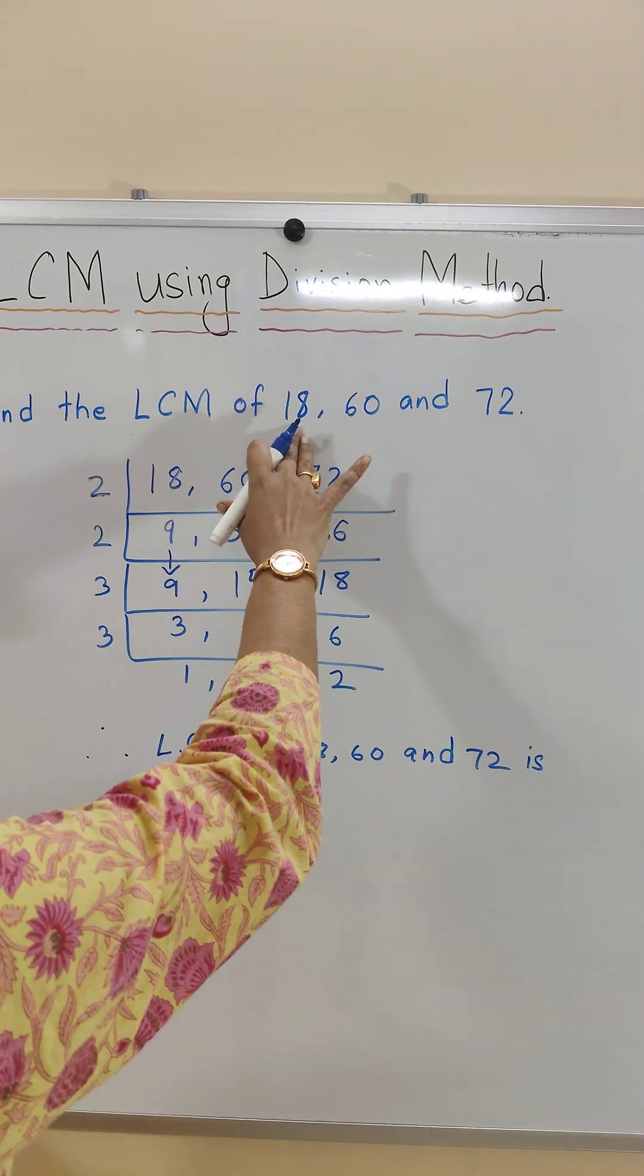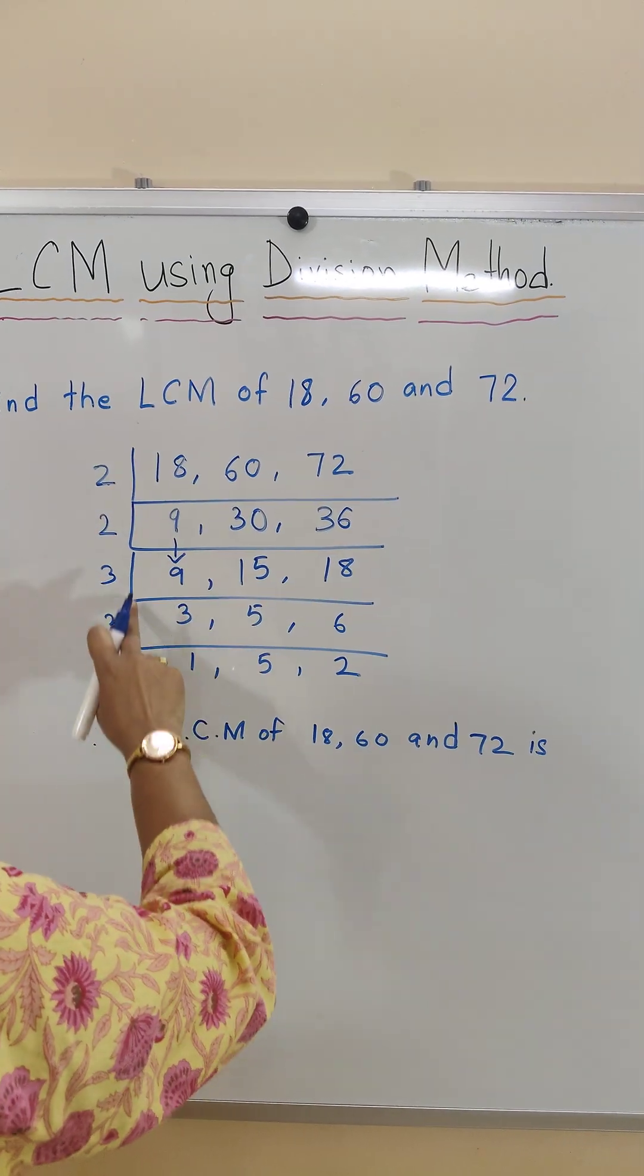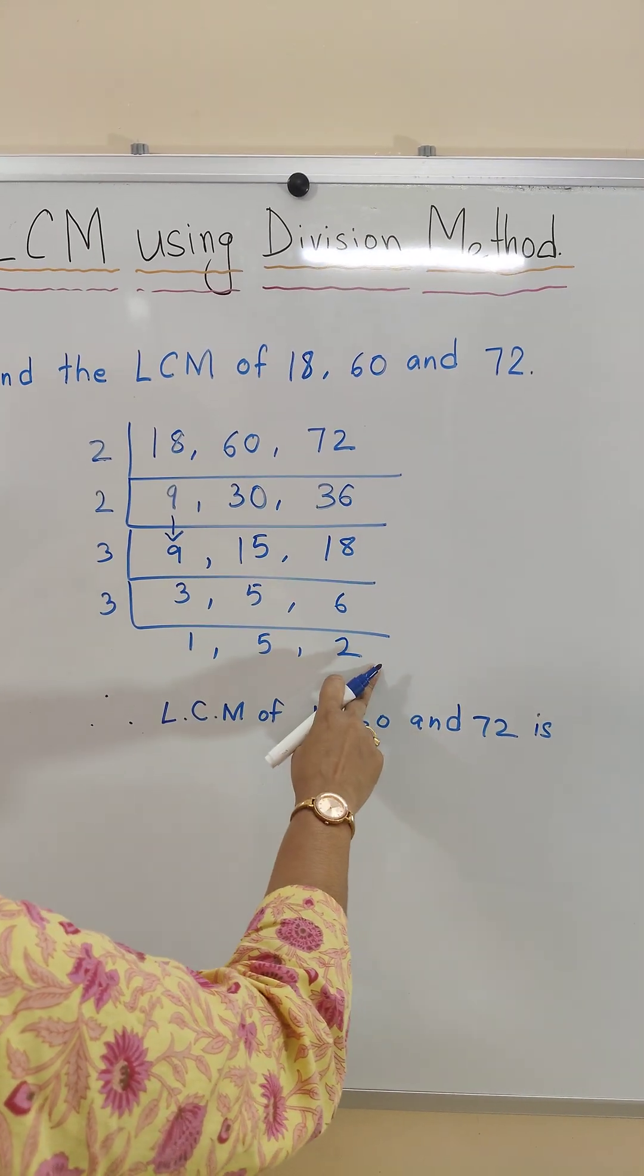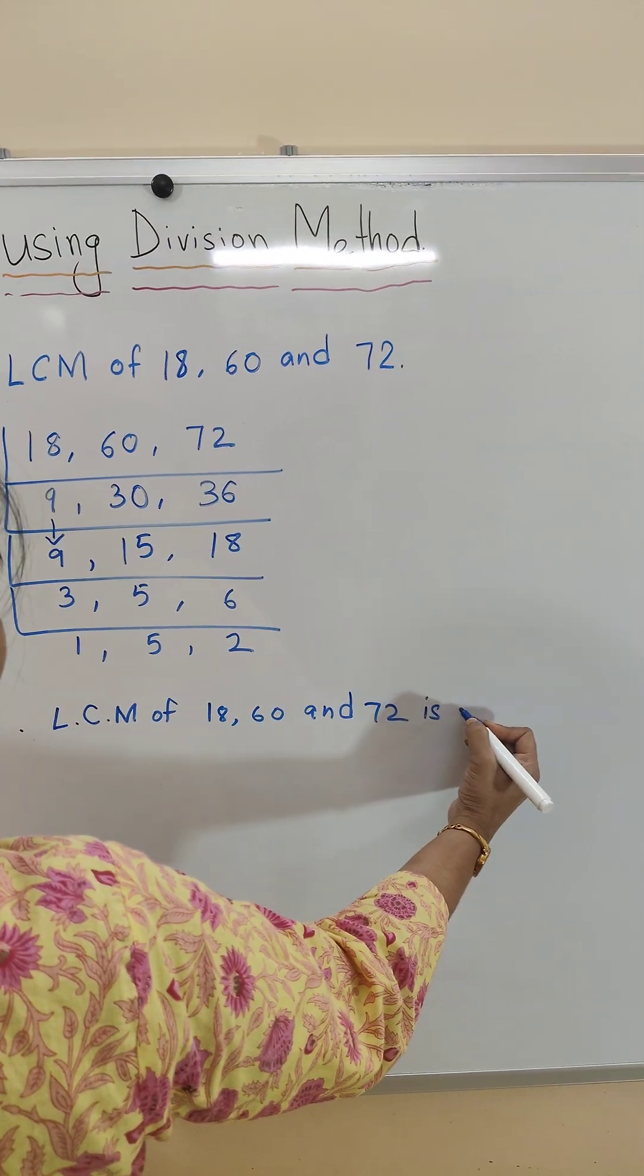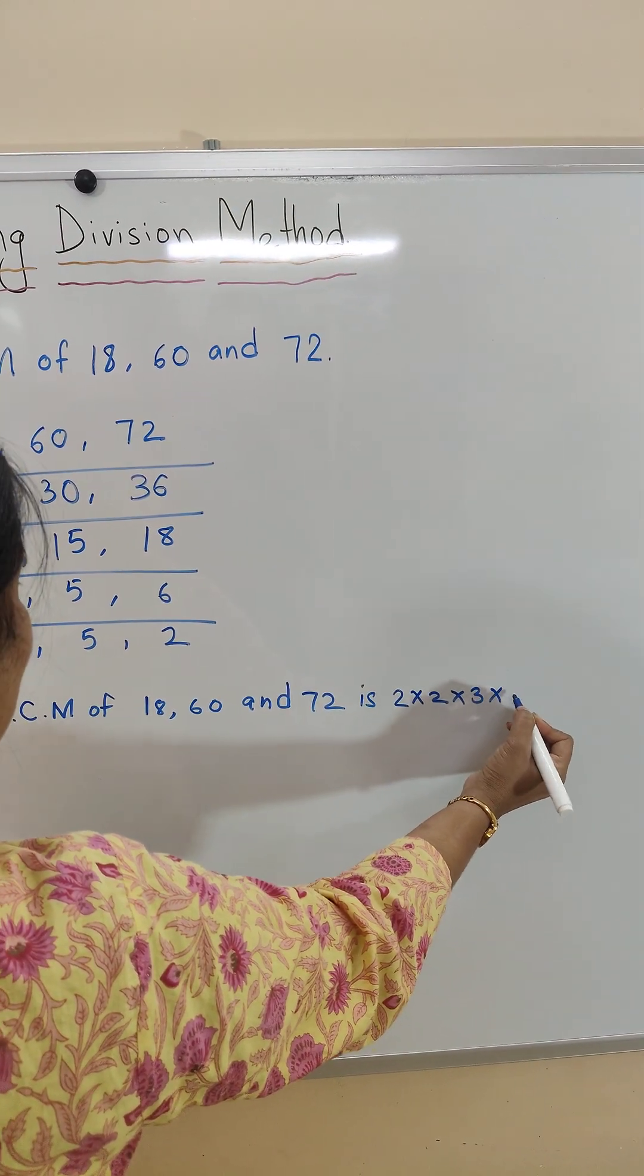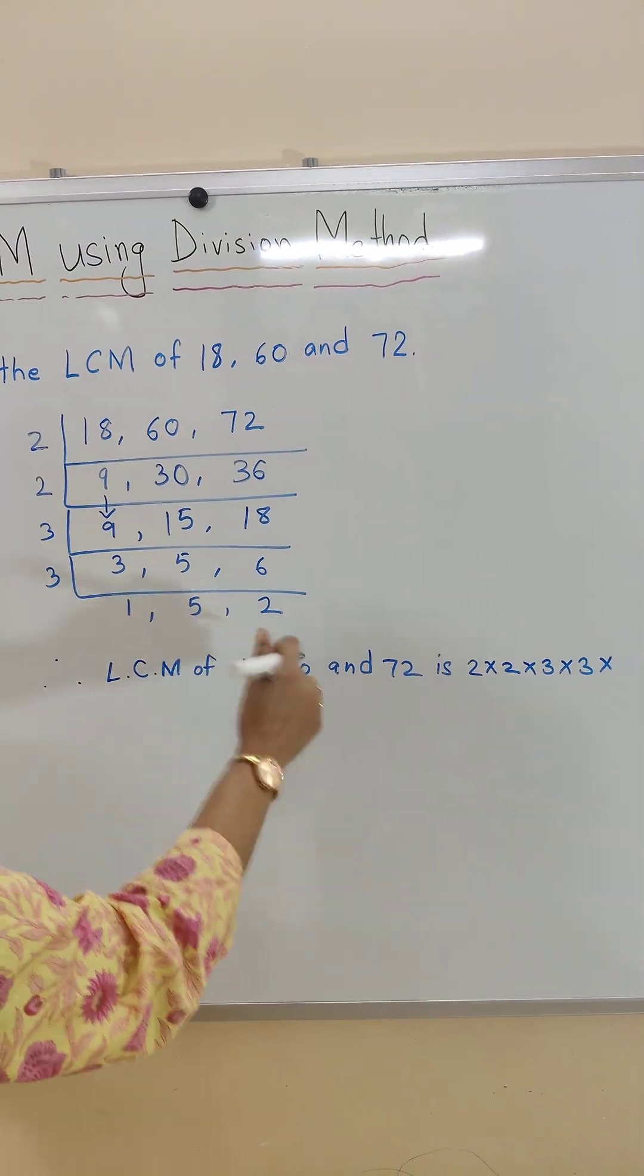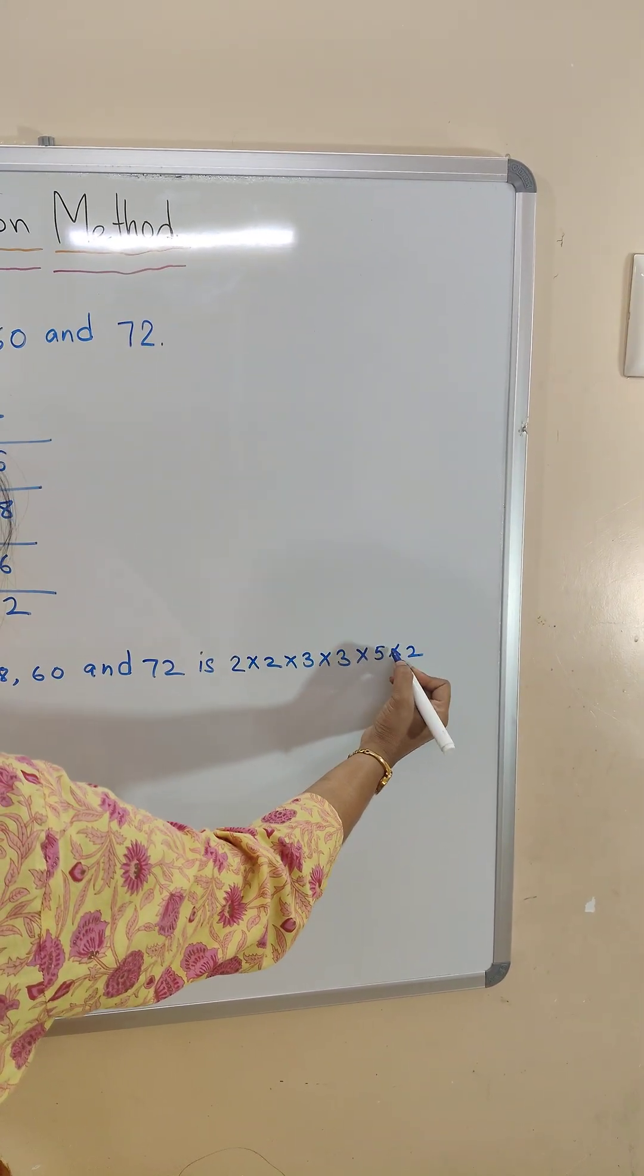Now we will find the LCM of 18, 60 and 72. We need to find the product of all the divisors and the numbers left undivided, that is 5 and 2. So what are the divisors? We will write the divisors first: 2 times 2 times 3 times 3, and the numbers left undivided, that is 5 and 2. We need to find the product of all these numbers.